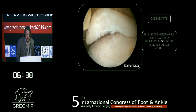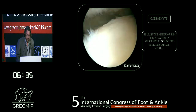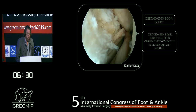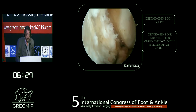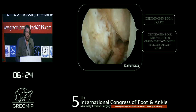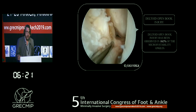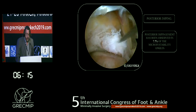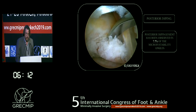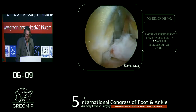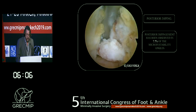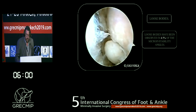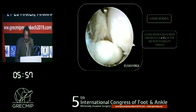Osteophytes — spurs in the anterior tibial rim — are observed in 10% of patients. Deltoid open book injury, which is a rotational instability, is observed in 10% of patients with a diagnosis of micro-instability. That is very important — you have to explore the deltoid ligament. Posterior impingement is seen in close to 10% of patients with micro-instability, who also present with posterior pain and other problems. Loose bodies are also important in this group of patients.